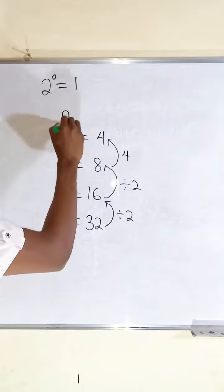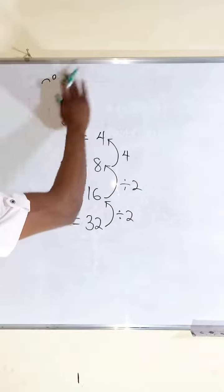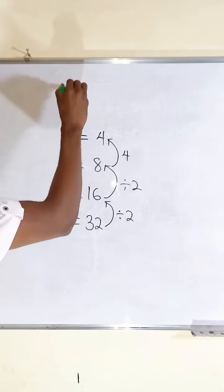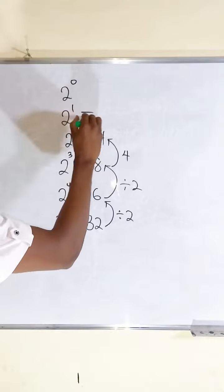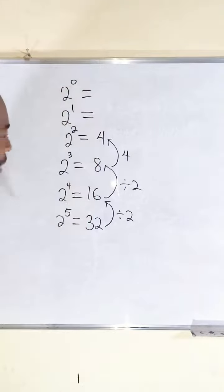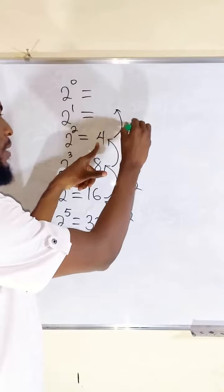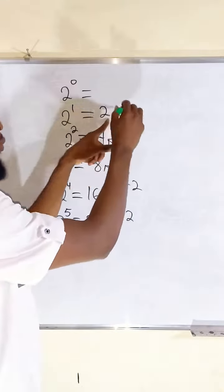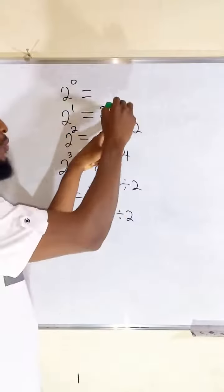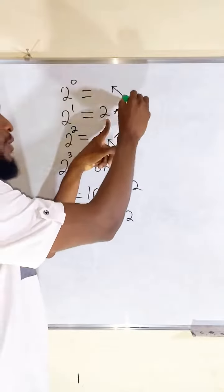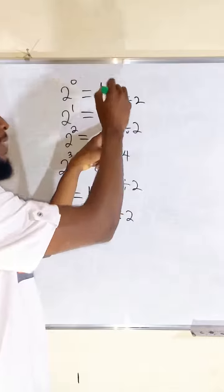What if I have 2 to the power of 1 and also 2 to the power of 0? What will this give us? If we divide 4 by 2, it gives us 2. What if we divide 2 by 2? 2 divided by 2 is 1.